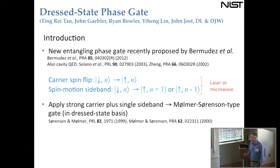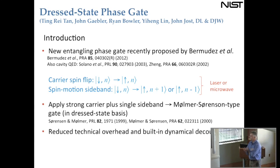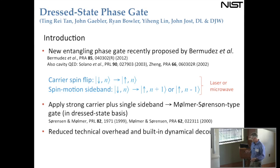In the Mølmer-Sørensen gate, one applies both motion-subtracting and motion-adding simultaneously. In this scheme, you only apply one and the carrier effectively provides that process. It operates in a dressed-state basis because we're applying a strong carrier that dresses the states. We're interested in this scheme because it has less technical overhead — we apply the carrier using microwaves, calibrate only a single sideband frequency, and get built-in dynamical decoupling for improved fidelity.